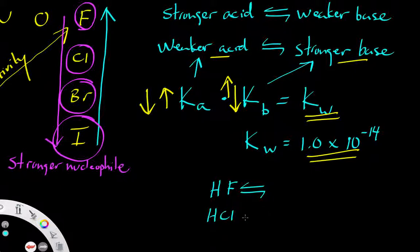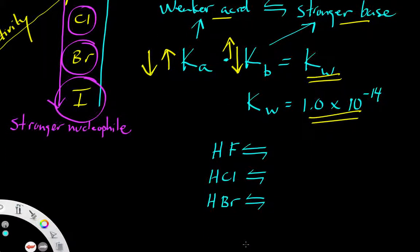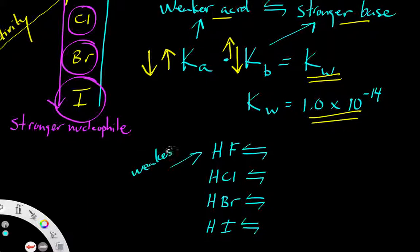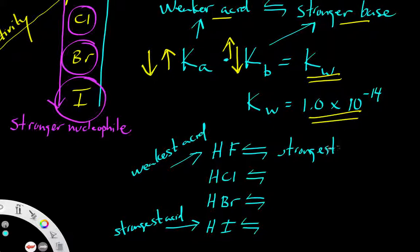Now applying this to our periodic table: HF, HCl, HBr, and HI — HF is going to be our weakest acid while HI is going to be our strongest acid. As a result, HF is going to produce the strongest base, and the strongest acid HI will produce the weakest base.